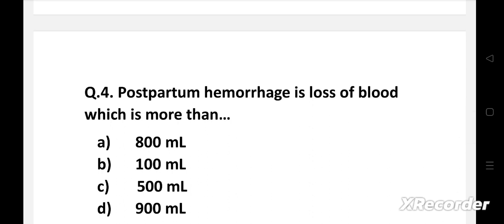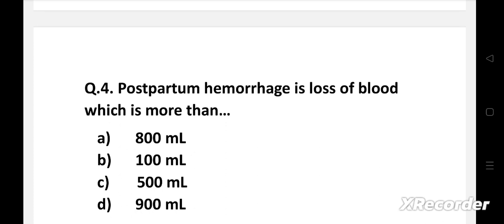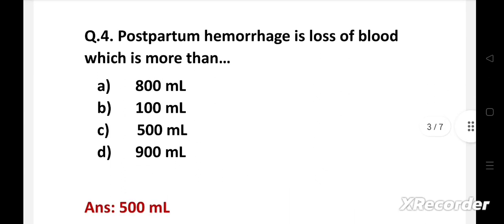Postpartum hemorrhage is loss of blood which is more than: a: 800 ml, b: 100 ml, c: 500 ml, d: 900 ml. The right answer is option c, 500 ml. Postpartum bleeding or postpartum hemorrhage is often defined as the loss of more than 500 ml of blood within the first 24 hours following childbirth.